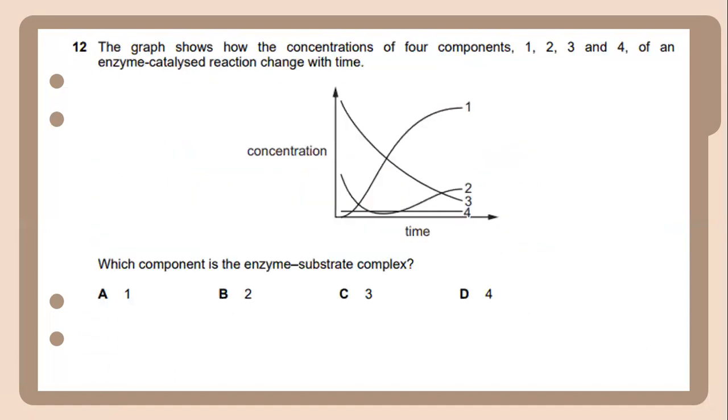Number 12. The graph shows how the concentration of components 1, 2, 3, and 4 of an enzyme-catalyzed reaction change with time. Which component is the enzyme-substrate complex? For this, the answer will be 4.